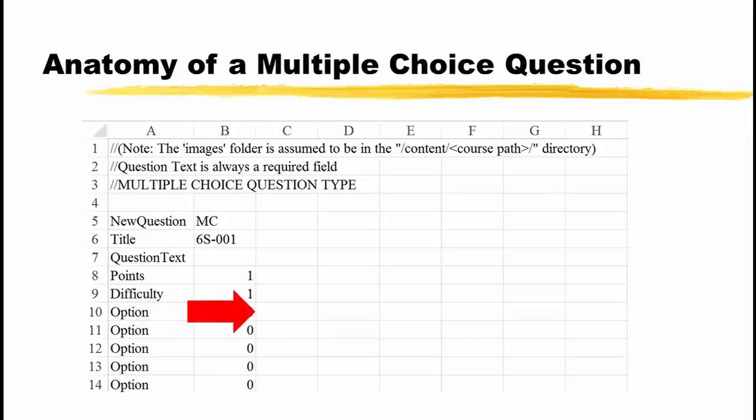Returning to our multiple-choice example, you enter the answer text in cell C10 to C14. C10 corresponds to A, C11 to B, and so on.